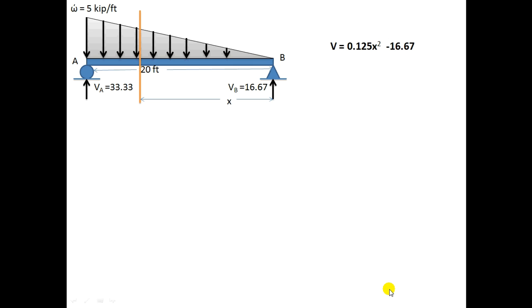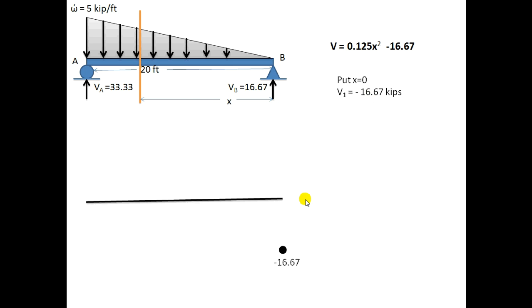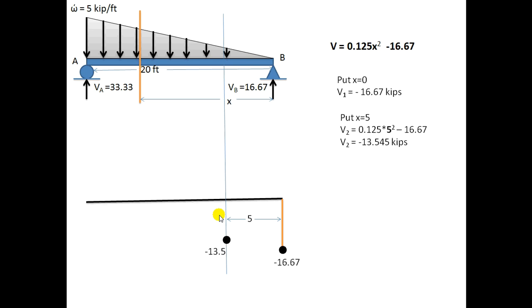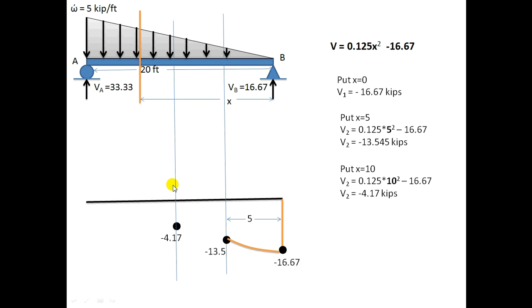To draw the shear force diagram using this equation, I simply substitute different values of X. At X = 0, I get the shear value at that point. At X = 5, I get the shear value there. At X = 10, I get the shear value at the midpoint. At X = 20, the shear value is +33.